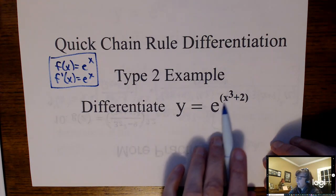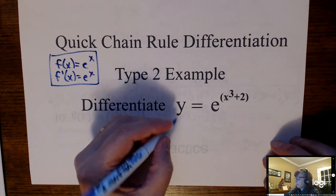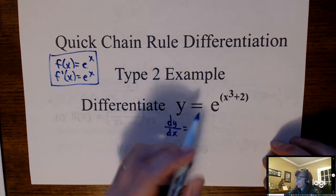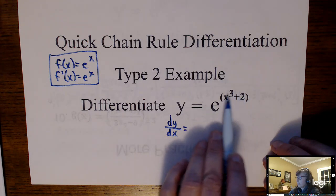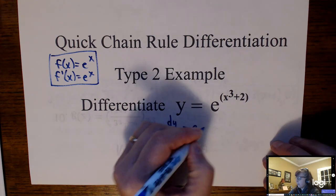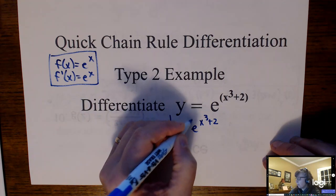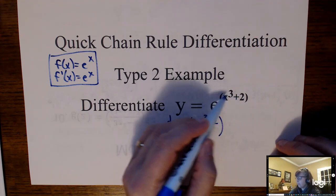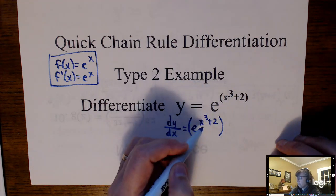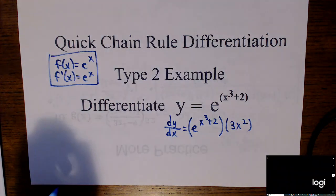What is the derivative of e to the x cubed plus 2? Similar to the chain rule, you're going to think of this as e to the u. The derivative of e to the u is e to the u — but that's only part one. Then you have to take the derivative of that power, which would be 3x squared. So that's the chain rule for e-functions.